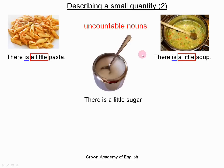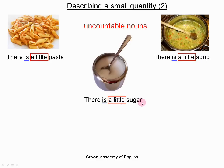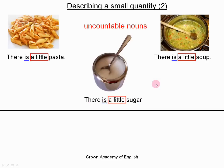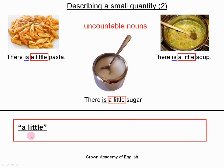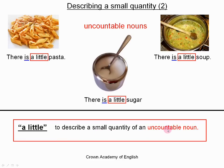It is the same with soup — it is an uncountable noun, so we use 'a little.' The noun stays in the singular, there is no S, and the verb is in the singular form. And the same with sugar: sugar is an uncountable noun, it is just a big mass of product. So we use 'a little,' sugar stays in the singular, and the verb is in the singular form.